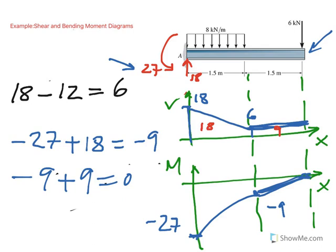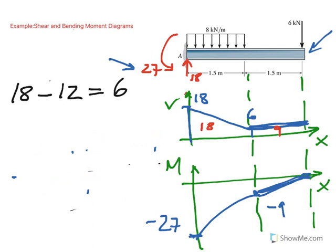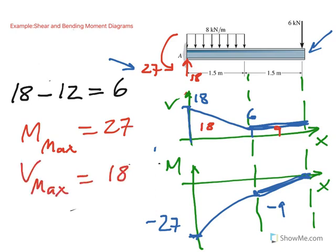So here the critical moment is 27 kilonewton meters, and the maximum shear load, as you could see in the diagram, is 18. So absolute maximum moment is 27 kilonewton meters, and absolute maximum shear is 18. And as I said before, these values are used in calculating maximum bending stress and maximum transverse shear stress.